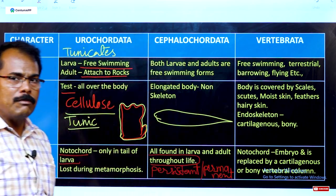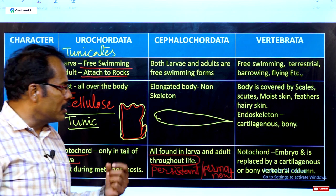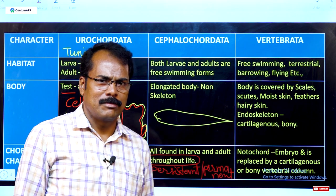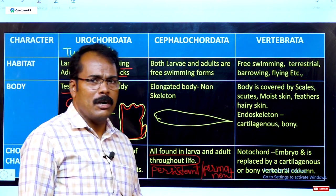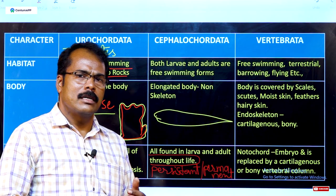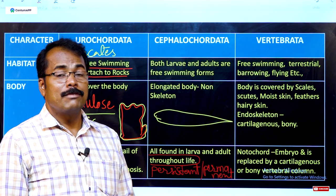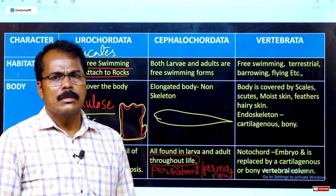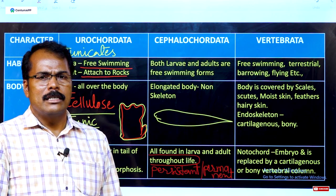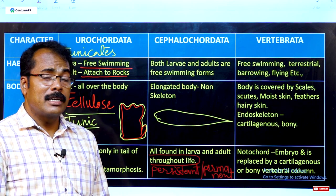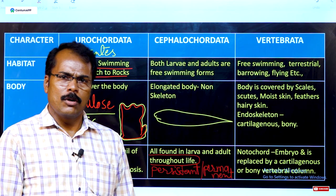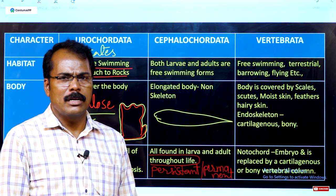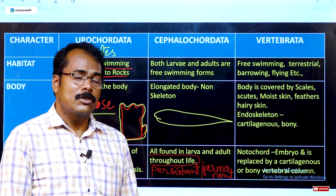In Vertebrata, chordate characters are mostly found during the embryonic stage. During embryonic stage, all chordate characters are present, but they are later replaced: the notochord is replaced by the vertebral column, the nerve cord is replaced by the brain and spinal cord, pharyngeal gill slits are replaced by lungs, and a post-anal tail may be present in larvae and in some adult animals.